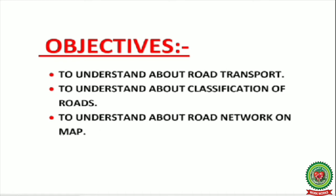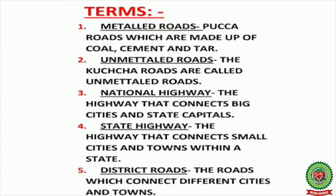The fifth question is: which means of transport were developed by India? Now let's look at today's objectives: first, to understand road transport; second, to understand the classification of roads — national highway, state highway, and district roads; third, to understand the road network on a map. Before reading, let's look at key terms. Metal roads are paka roads made of coal, cement, and tar.